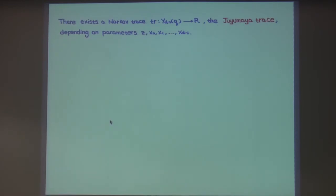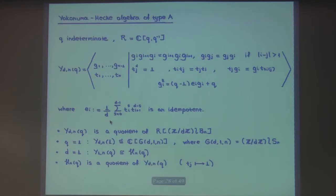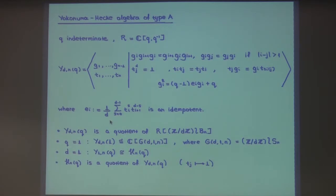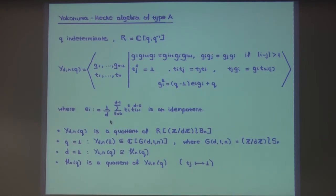Regarding the dimension: the dimension of this algebra is the rank of the group. As with the Iwahori-Hecke algebra, which is n!, it is d^n times n!. We do have a standard basis very similar to the Hecke algebra basis.